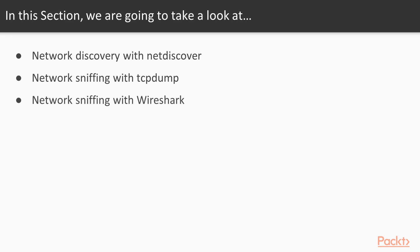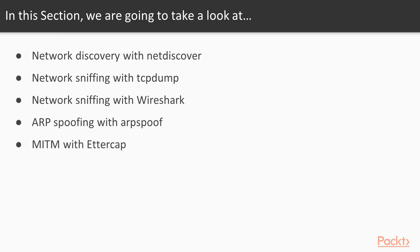We'll then move on to the second part of network sniffing using Wireshark, which most of you have probably already heard of — a fantastic network sniffing and packet capturing tool. We'll then move on to spoofing, more specifically ARP spoofing, looking at the ARP spoofing process and how to do it using a tool called ARP spoof, to achieve a man-in-the-middle position. We'll finish off with ARP poisoning to get man-in-the-middle access using a tool called Ettercap.